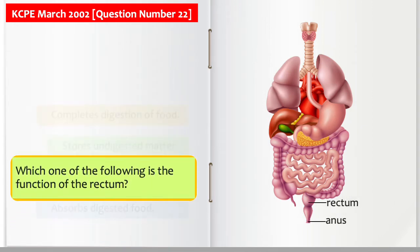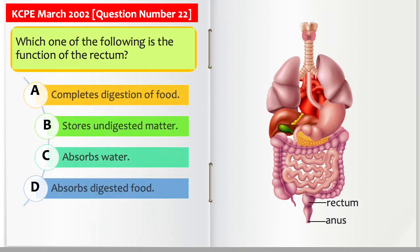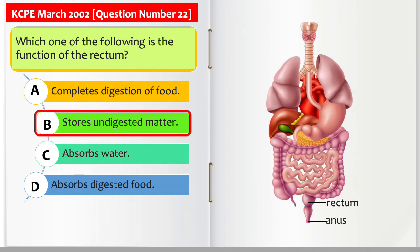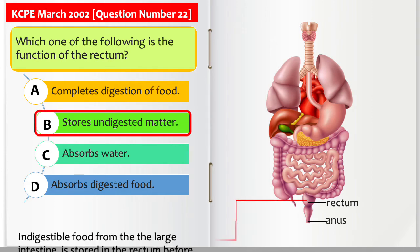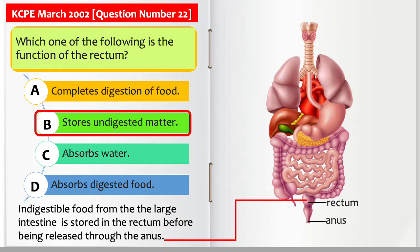Which one of the following is the function of the rectum? Is it to complete digestion? Is it to store undigested food matter? Is it to absorb water? Or is it to absorb digested food? The answer is B. Indigestible food from the large intestine is stored in the rectum before being released through the anus.